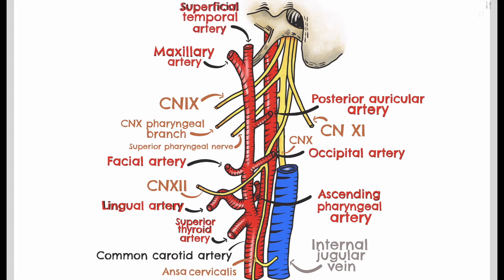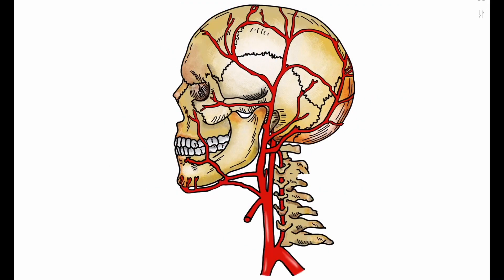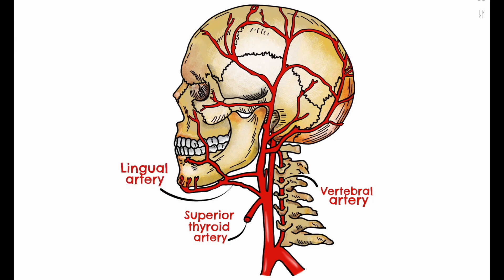Now let's go through these eight branches with their function. The superior thyroid artery supplies the thyroid gland, infrahyoid and sternocleidomastoid muscles. The lingual artery supplies the intrinsic muscles of the tongue and the floor of the mouth. The ascending pharyngeal artery supplies the pre-vertebral muscles, middle ear, cranial meninges, and of course the pharynx itself.